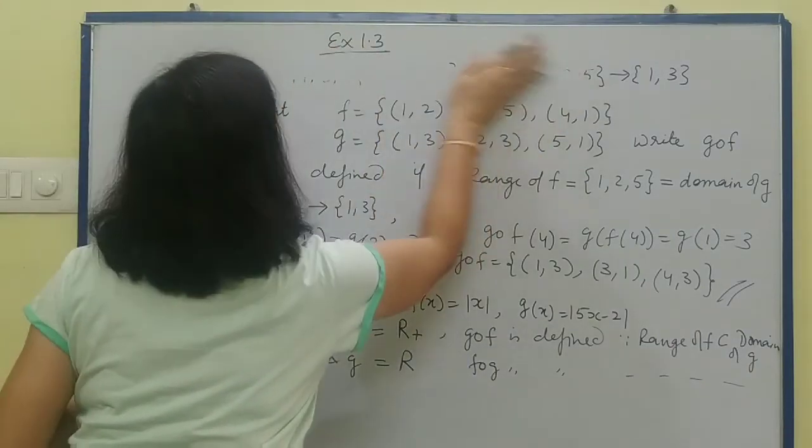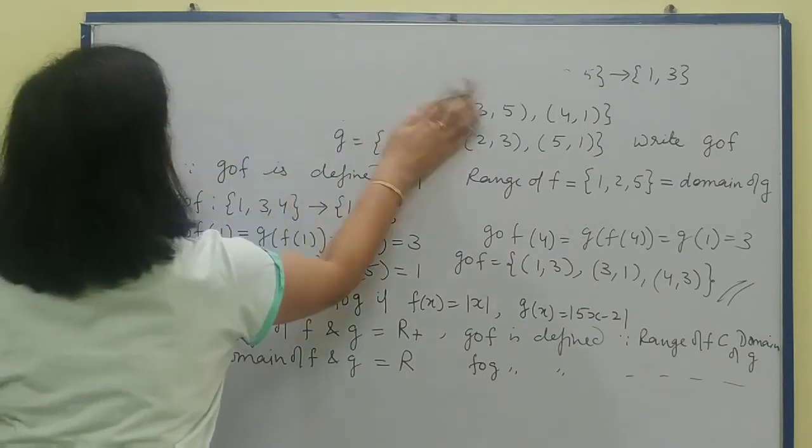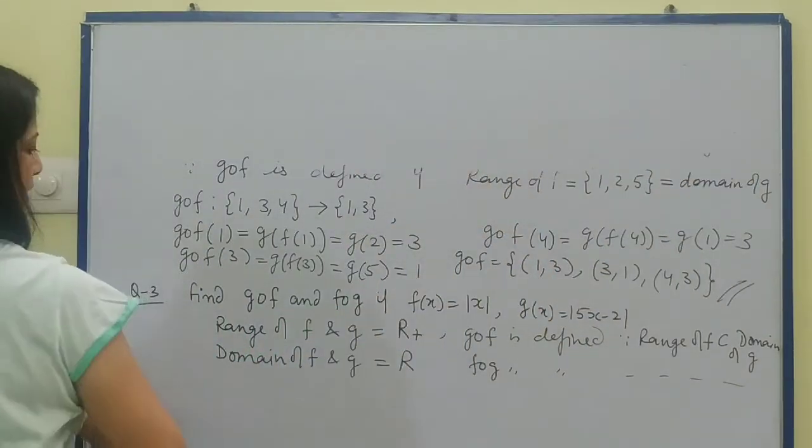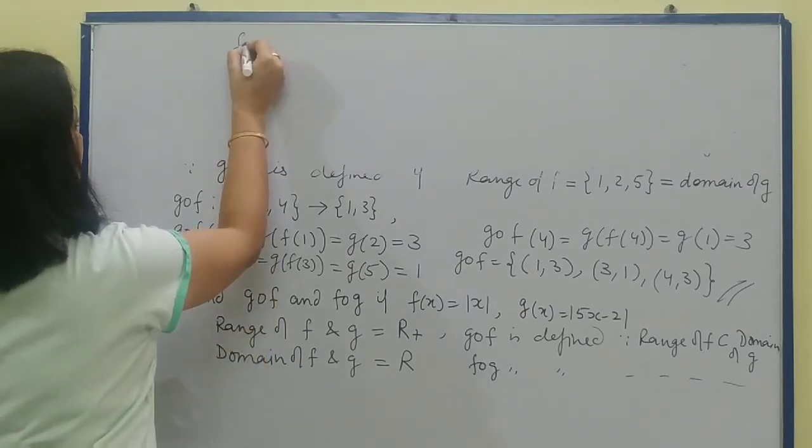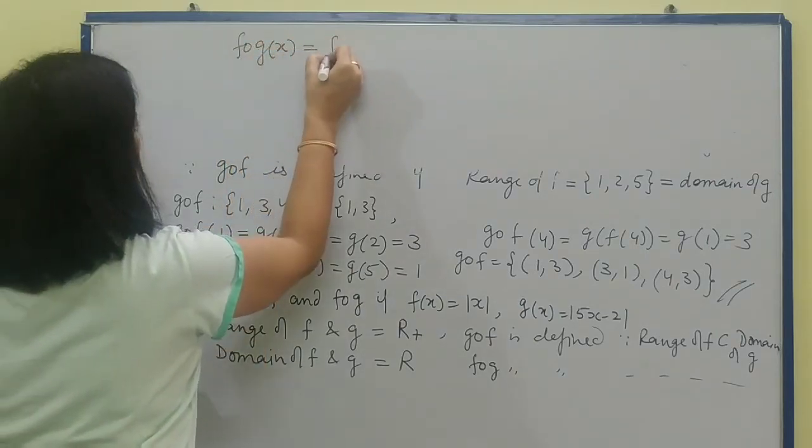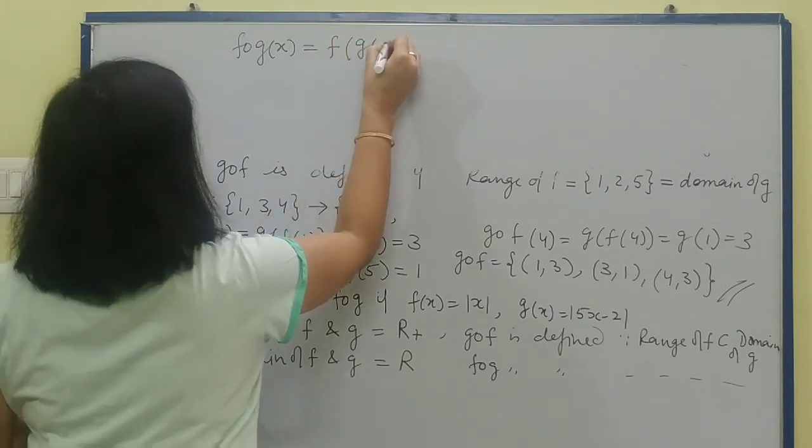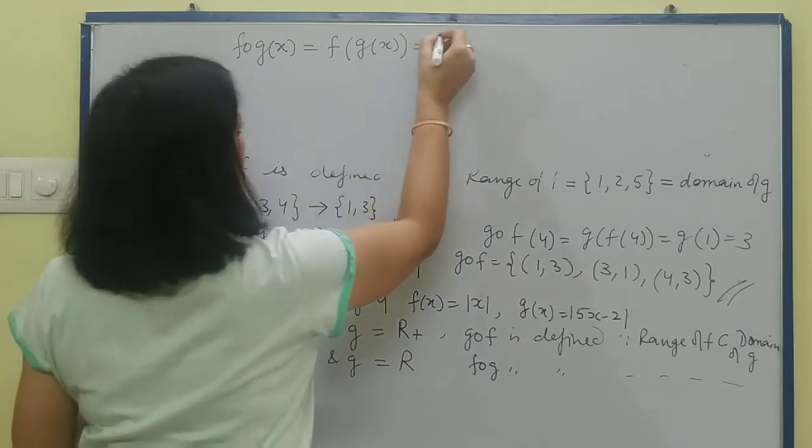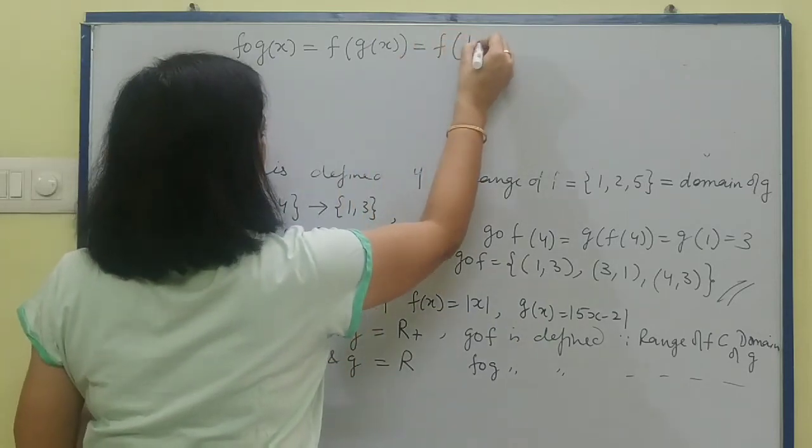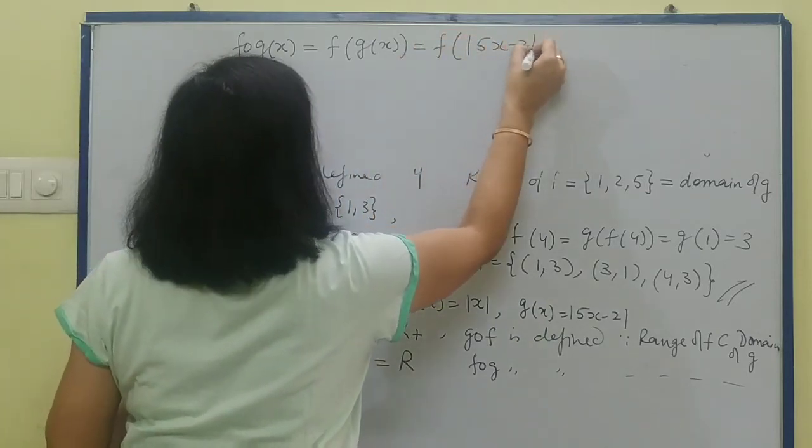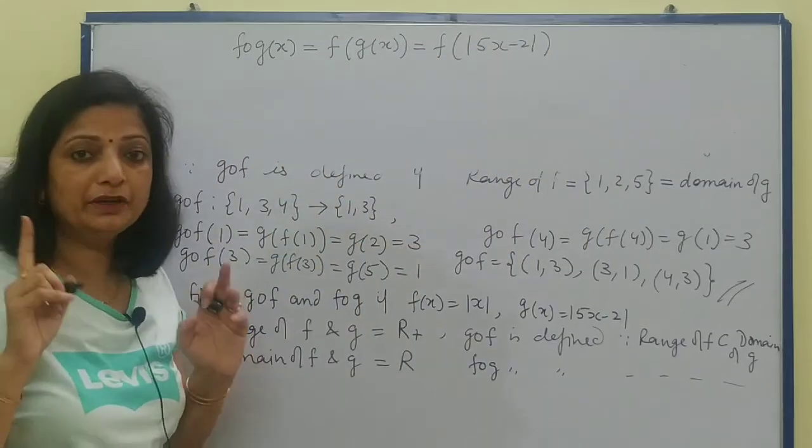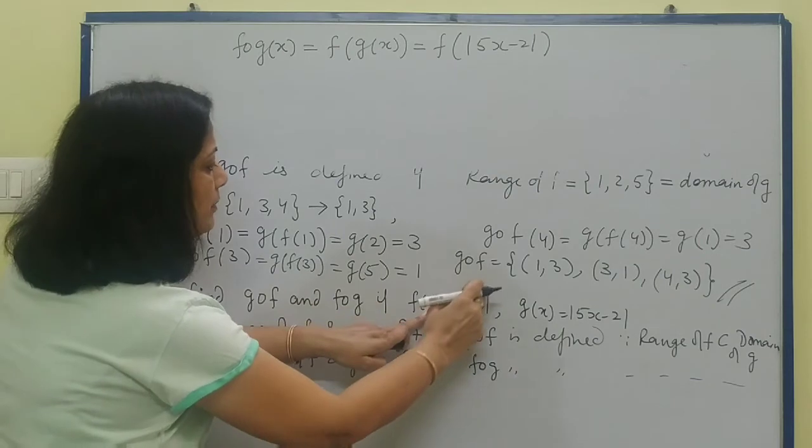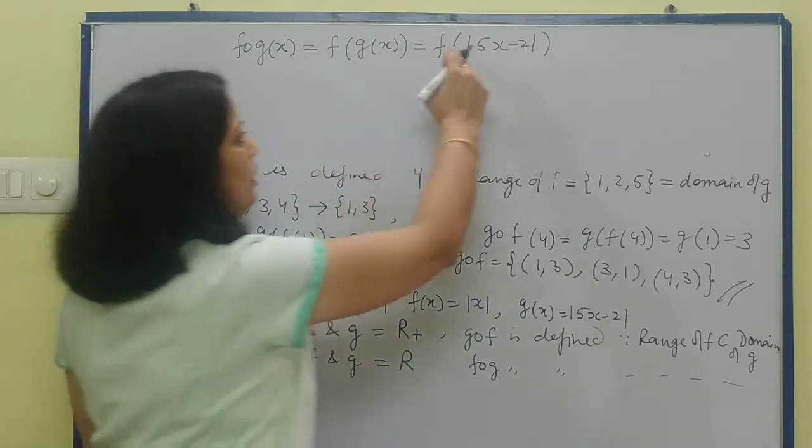Now how to find the value? To find it, what do we do? Now f composite g: first you'll write the value of g(x). What is g(x)? Put it: mod of (5x minus 2). What does f do? The condition of f is to apply mod on this element. There's already one mod on our element, and one more mod came. But if you put double mod, that is meaningless. One mod has the same meaning as double mod, so we'll change it to single mod. Clear?